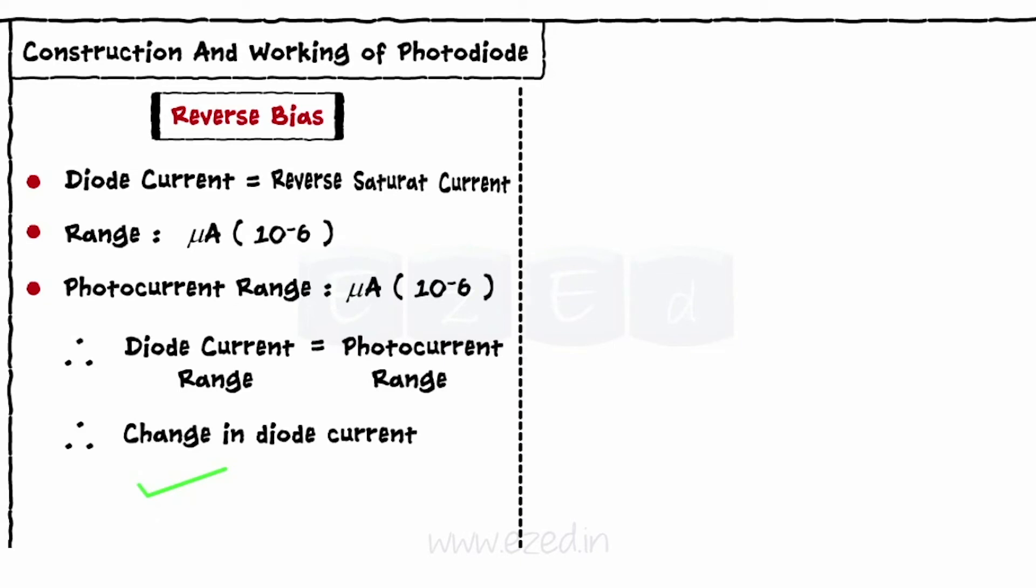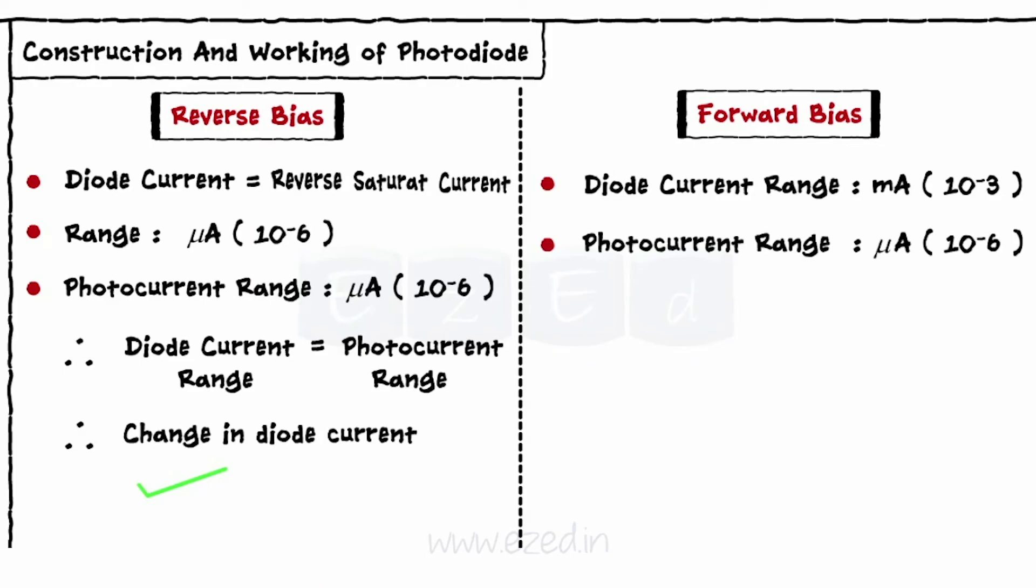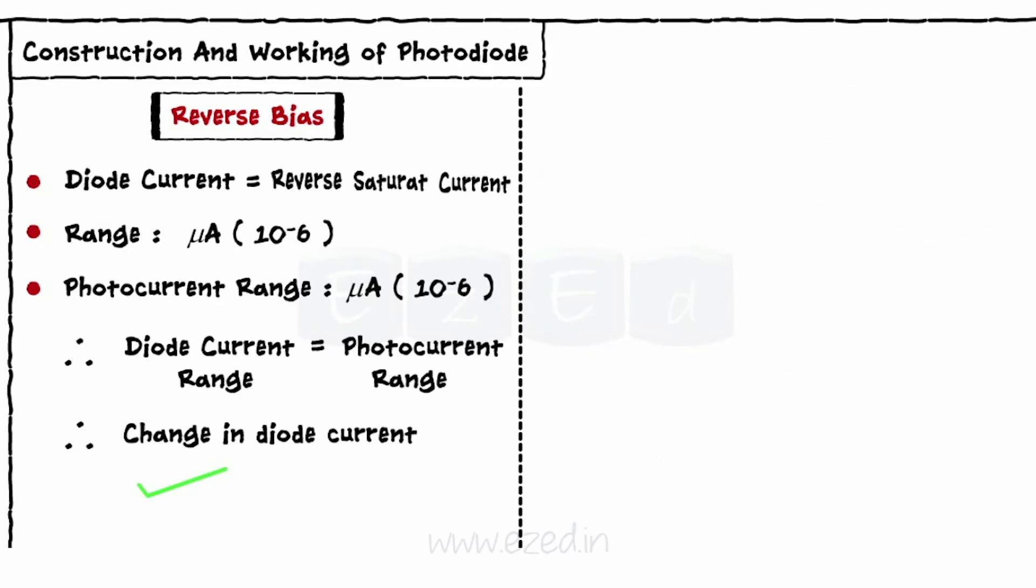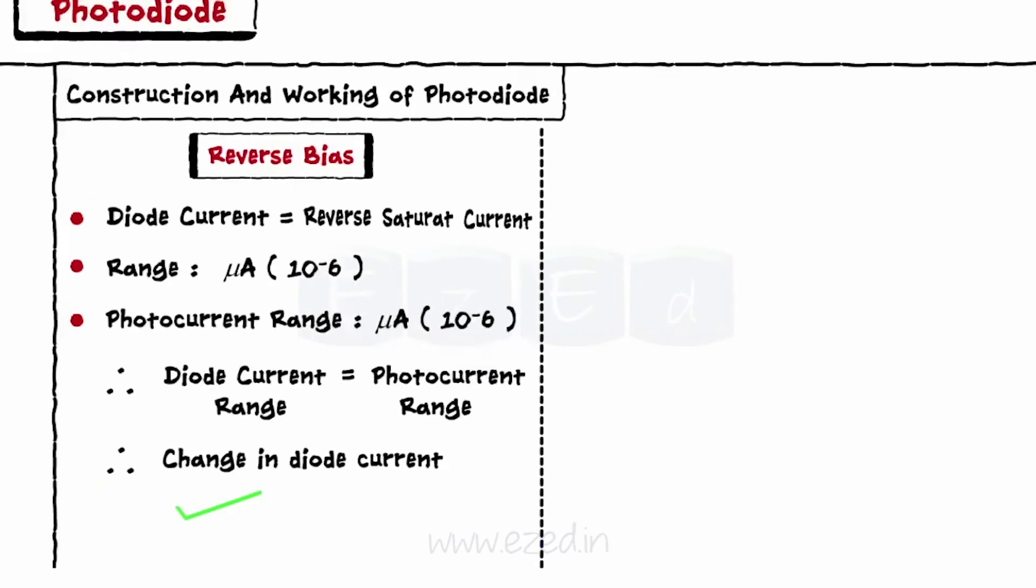On the other hand, if we operate a diode in the forward bias, then the diode current is in the range of milliampere. Thus, a photocurrent of few microampere won't create any effect on the diode current. Thus, we operate a photodiode in a reverse bias mode always.